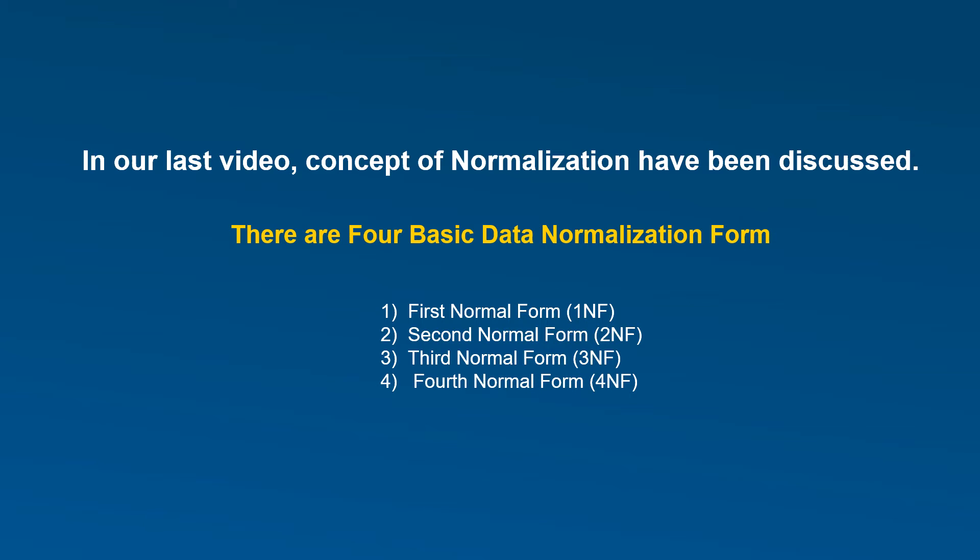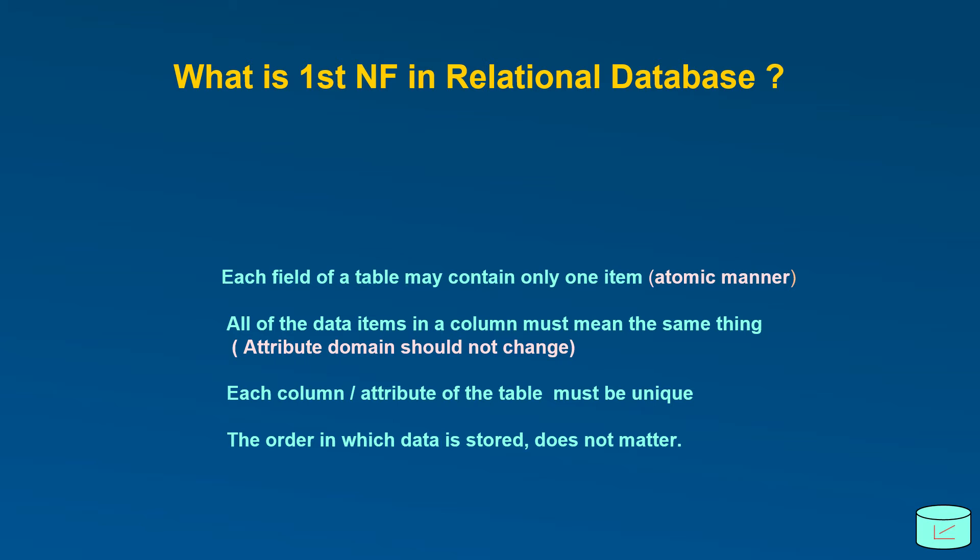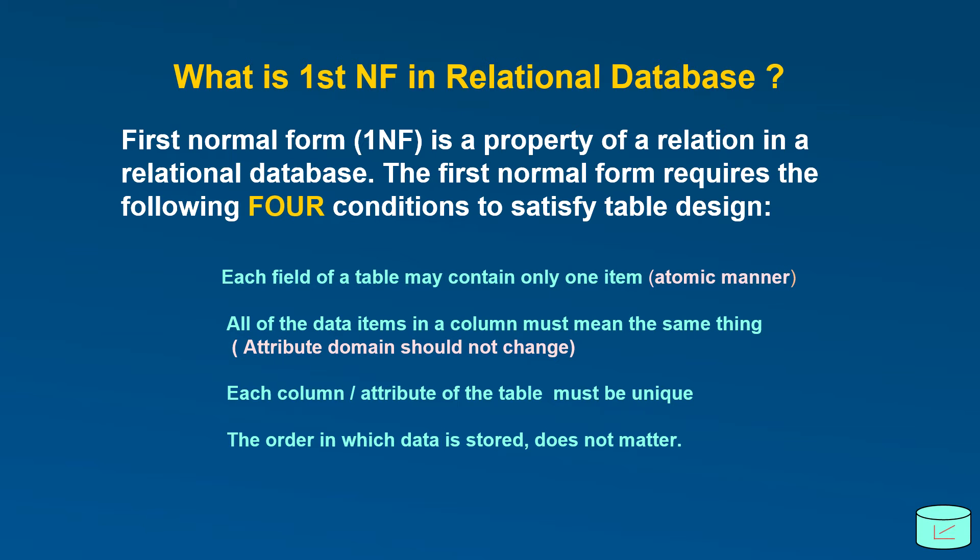In this video, I am going to talk about what is first normal form in a relational database. So first normal form is a property of a relation in a relational database. The first normal form requires the following four conditions to satisfy table design.